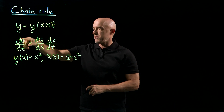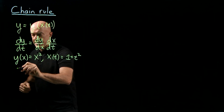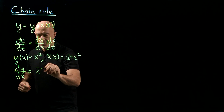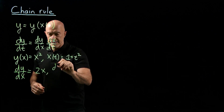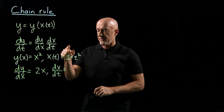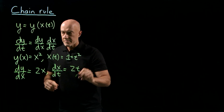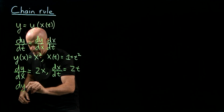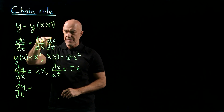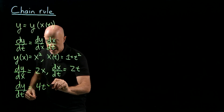Here we're going to use the Leibniz formula for the chain rule to differentiate. We need to find dy/dx, which is the derivative of x squared, which is 2x. And we have to find dx/dt, which is the derivative of 1 plus t squared. The derivative of 1, a constant, is 0. The derivative of t squared is 2t. So then we have dy/dt, which is dy/dx — which is 2x — times dx/dt, which is 2t.